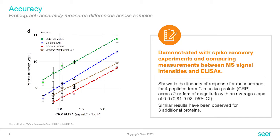Another important metric for performance in proteomics is accuracy — how much of the quantitative information within the sample can we capture. To evaluate accuracy, measured here as linearity of response, we spiked in CRP at different concentrations determined by ELISA and compared the peptide intensity readout with the mass spec using our Proteograph assay. The result is a linear response, indicating that nanoparticles are able to capture the differential abundance of proteins across different samples.